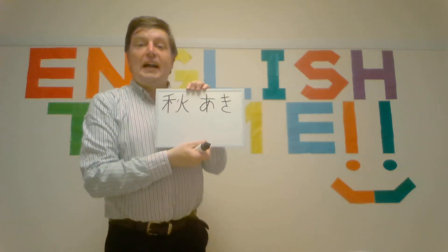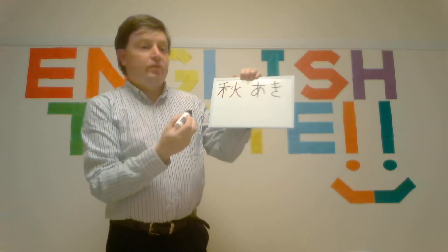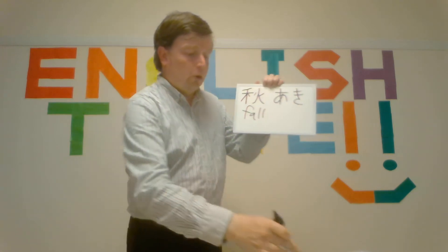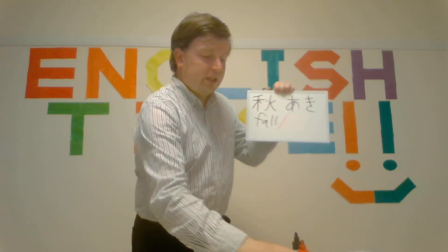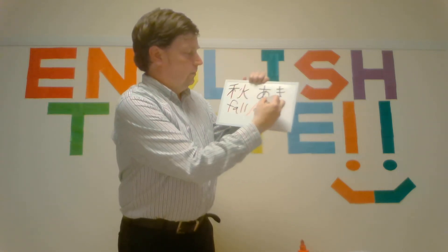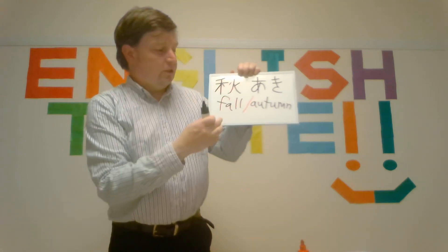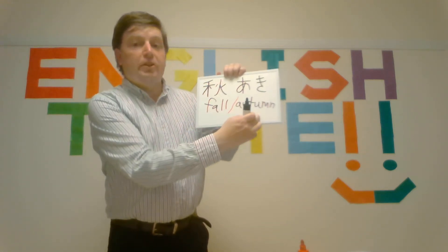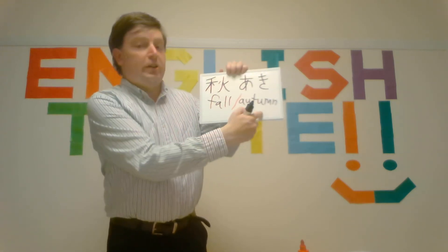And next: aki. What is aki in English? So fall. We also say autumn. Please repeat: fall. Autumn. Once more: fall. Autumn.